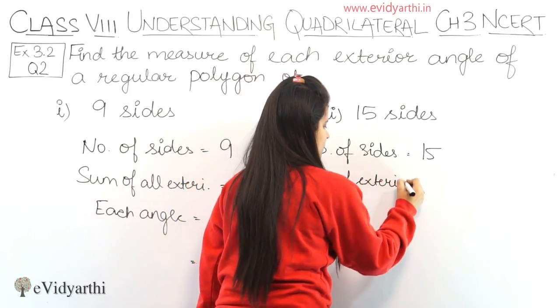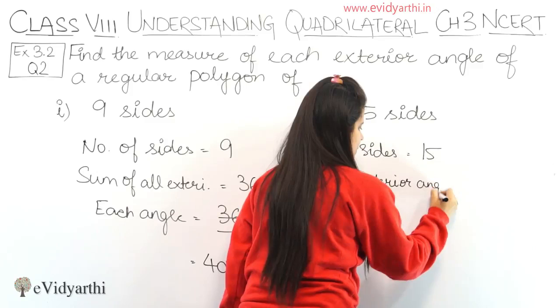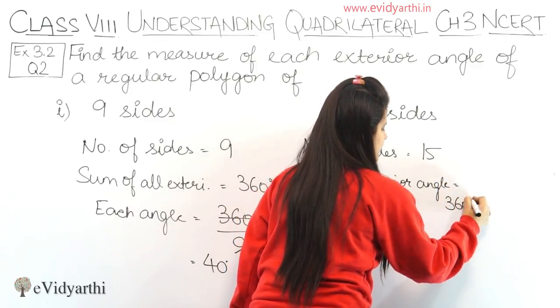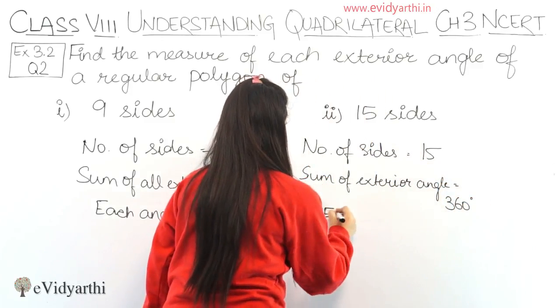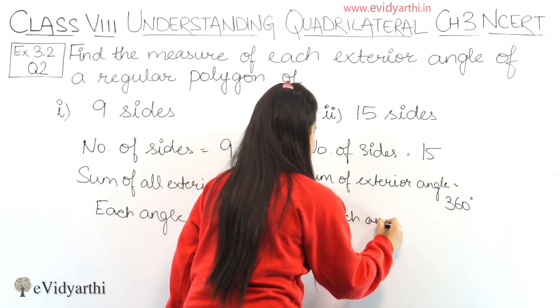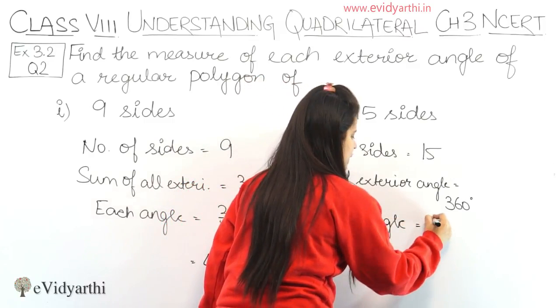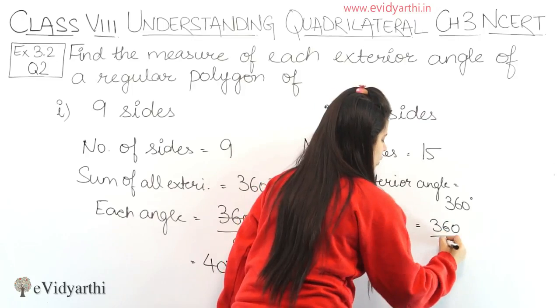Then sum of exterior angles, sum of exterior angles is given as 360 degrees. Now each angle will be equal to 360 upon 15.